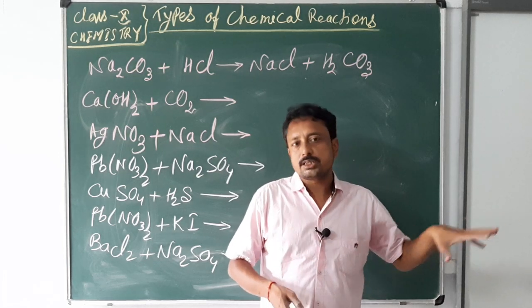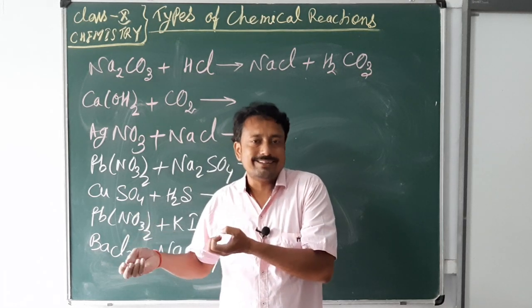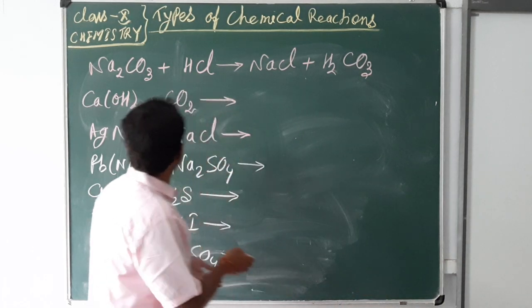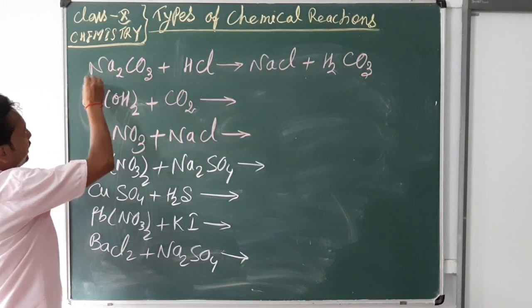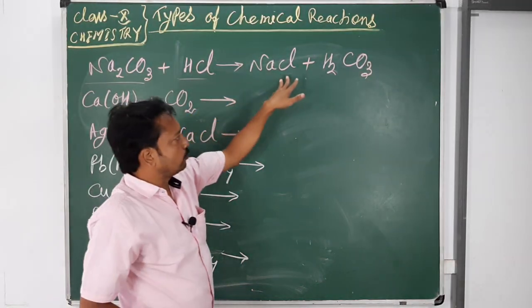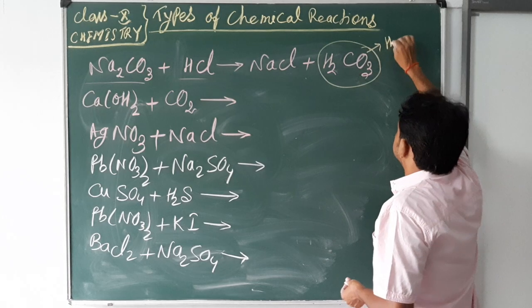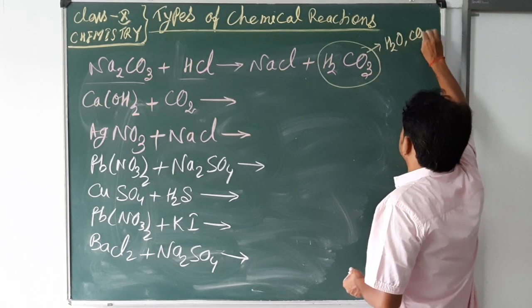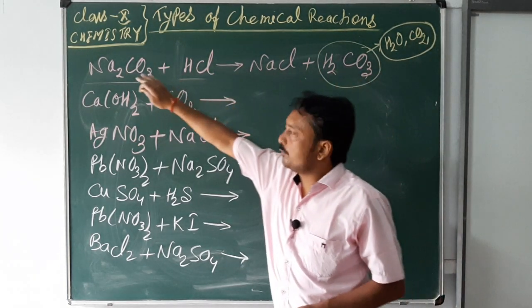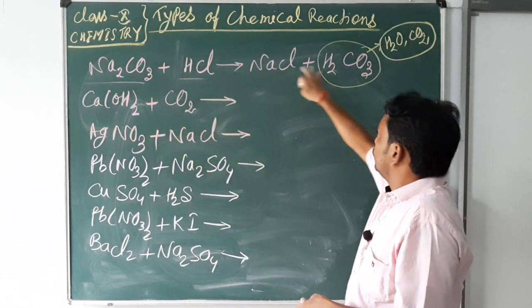In double displacement, there will be two products formed and the two reactants exchange their partners — either as radicals or ions. For example, if sodium carbonate reacts with hydrochloric acid, it forms sodium chloride and H₂CO₃, which further decomposes to H₂O and CO₂. This is one example of double displacement because two compounds interchange their partners and form two new different products.